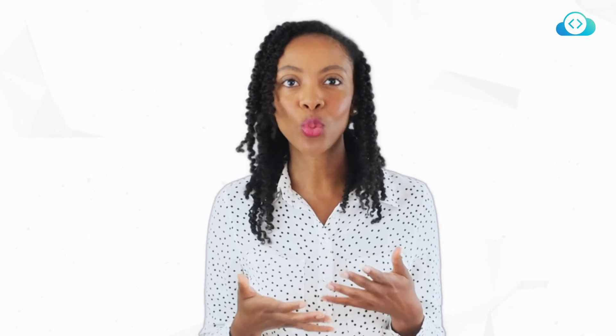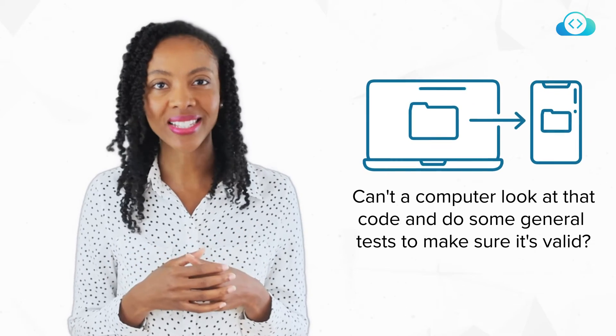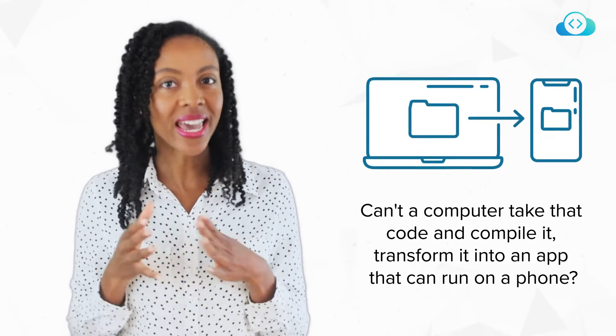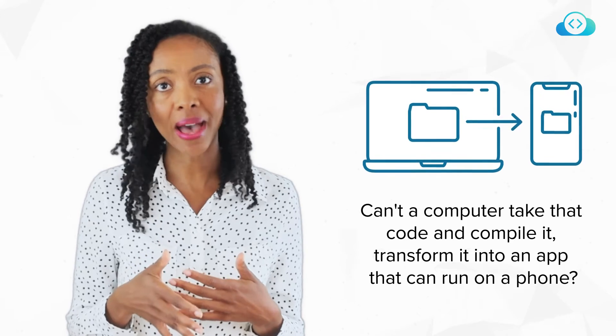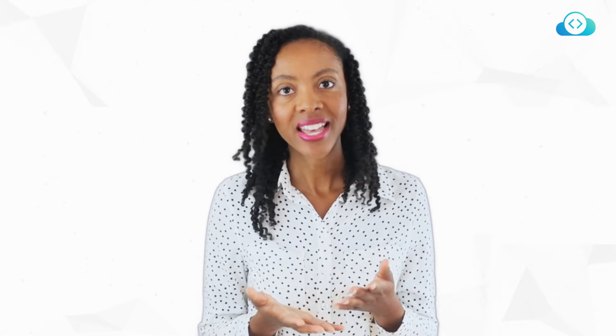Now we can finally jump to what DevOps is at its core. Think of the situations we just discussed. Do we really need a person to step in every time the code of our application changes? Can't computers do this? Can a computer look at that code and do some general tests to make sure it's valid? Can a computer take that code and compile it, transform it into an app that can run on a phone? Can it also test that this app works well with the servers we have? Of course it can. A DevOps team can automate all of these steps. Now the developers can see the result of their work faster — they push some new code, and in a few minutes they get some results. Maybe some tests fail, but now they quickly see what they have to correct. Or everything works just fine and they can continue to add even more features.